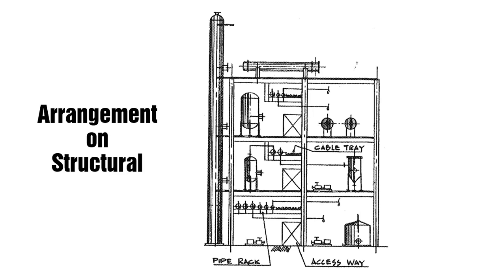From this photo, you'll be able to see how equipment is arranged in a structural building. Most equipment is arranged on the ground floor in a graded area, but in chemical plants and process plants, equipment is also arranged in structural buildings at multiple levels. You'll be able to understand how things are planned, how electrical cable trays are planned, how equipment is placed, and how accessways are designed.